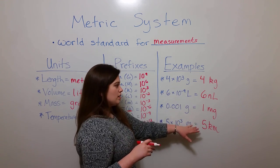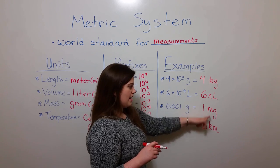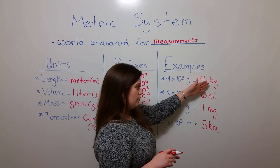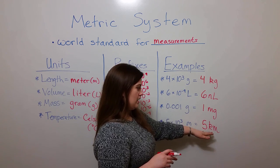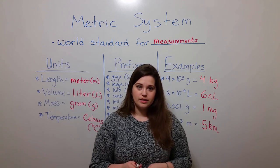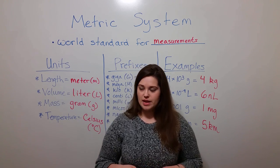So these are examples of how these prefixes—the k, the n, the m, and the k—can be added in front of the base units for things like gram, liter, and meter in order to better explain certain types of measurements.